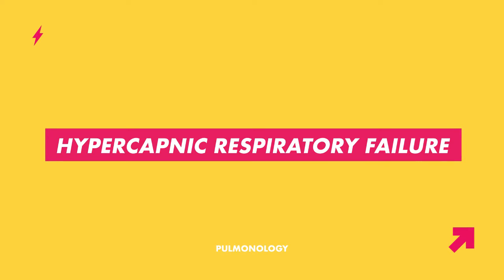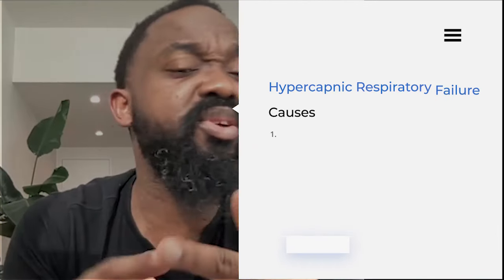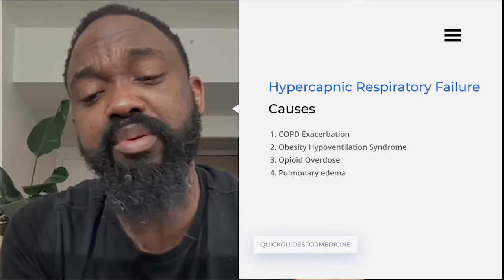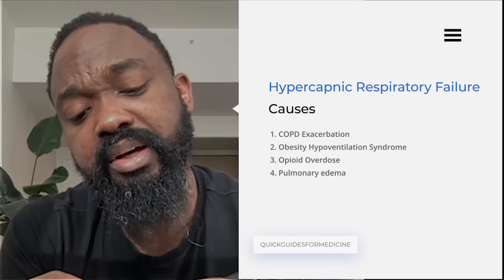Moving to hypercapnic respiratory failure — the diagnosis is made via arterial blood gas, where the partial pressure of CO2 is higher than normal. Once identified, the goal is to get the CO2 out while also addressing the underlying cause. Common causes of hypercapnic respiratory failure include COPD exacerbation, obesity hypoventilation syndrome, opioid overdose, and pulmonary edema.